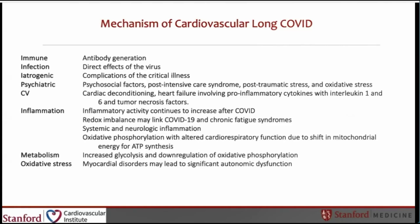From a cardiovascular standpoint, there is clear evidence of cardiac deconditioning, heart failure involving pro-inflammatory cytokines including interleukin-1, interleukin-6, and tumor necrosis factors. Inflammatory activity continued to increase after COVID in long COVID patients. Redox imbalance may also link COVID-19 and chronic fatigue syndrome, and there is systemic and neurologic inflammation. Oxidative phosphorylation with altered cardiac respiratory function due to a shift in mitochondrial energy for ATP synthesis was seen. In terms of metabolism, there is increased glycolysis and downregulation of oxidative phosphorylation, and myocardial disorders may lead to significant autonomic dysfunction.